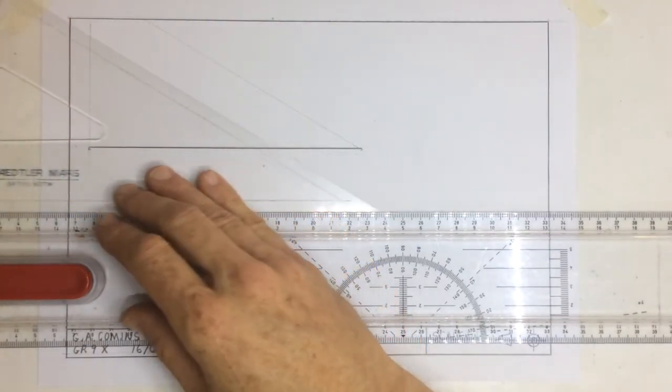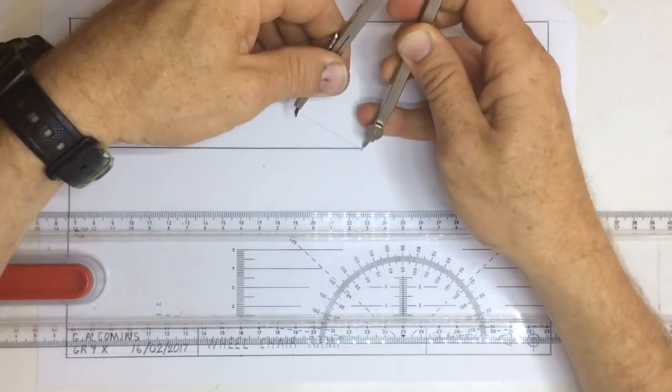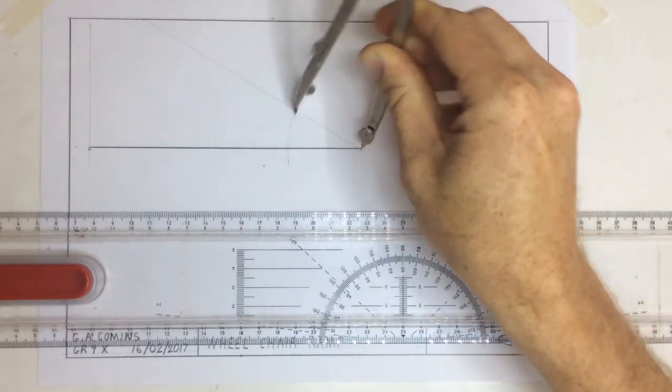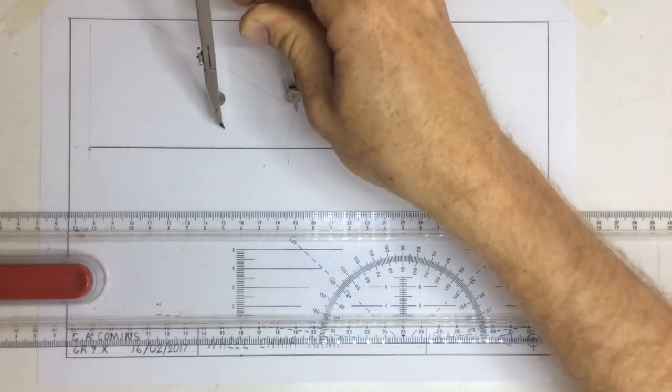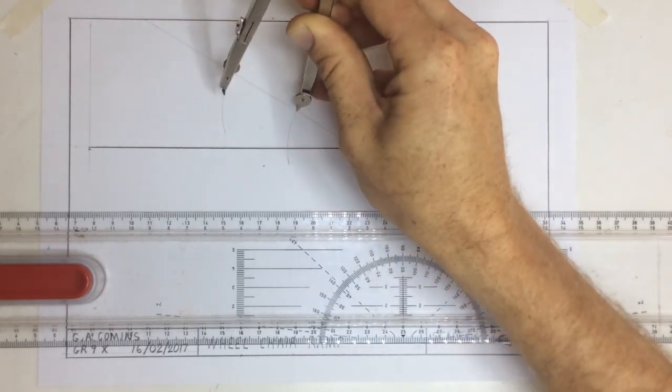After I've got that 30 degree angle, I want to bisect it using my pair of compasses. So I set my compasses to any length, draw an arc in construction lines, place the point where the arc hits that line, and draw an arc over there keeping the same radius.